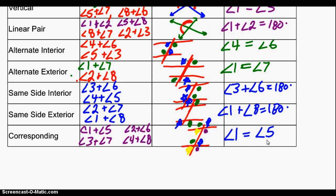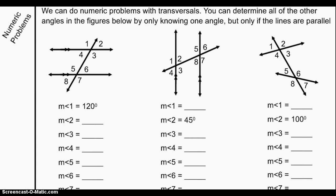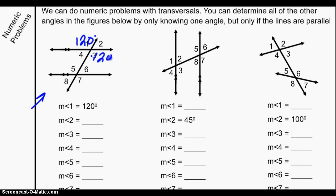That wraps up the vocab. Let's put these words to use. We can do numeric problems with transversals — you can determine all the other angles in the figures by knowing only one angle, but only if the lines are parallel. This first one says the measure of angle one is 120 degrees. Angle three is a vertical angle, so it's also 120. Angle two is a linear pair, so that's 180 minus 120 — that's 60 degrees. Angle four is a vertical angle, so 60 degrees. Angle five is a corresponding angle to angle one, so five is also 120. Angle seven is a vertical angle to five, so 120. Angles six and eight are linear pairs, so both 60 degrees. Do you see the checkerboard pattern?